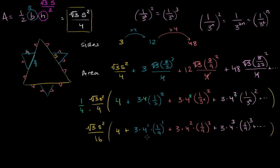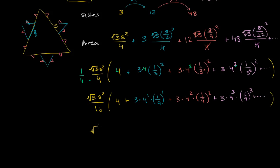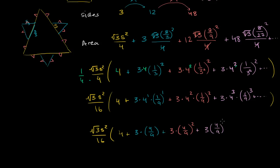Now we start to see the pattern clearly. Simplifying, this becomes √3·s²/16 times the quantity 4 plus 3 times (4/9) plus 3 times (4/9)² plus 3 times (4/9)³, continuing on and on with successively larger powers of 4/9. This is the sum we need to find our area, and in the next video we'll use tools for infinite geometric series to evaluate it — rederiving rather than just using a memorized formula.